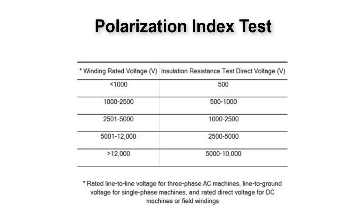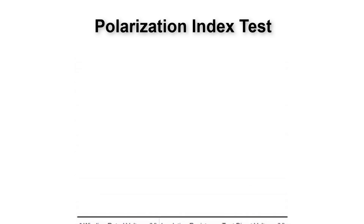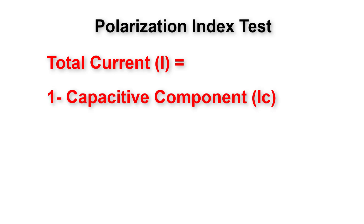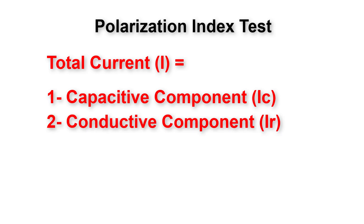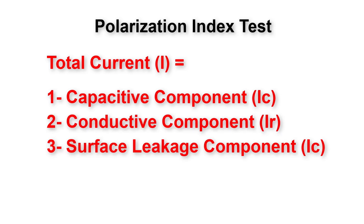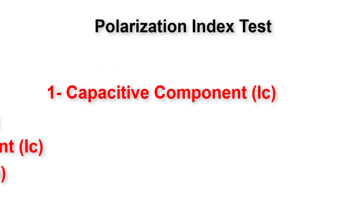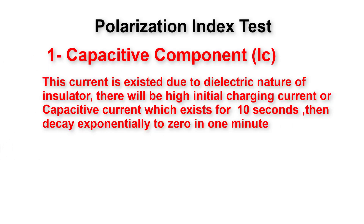Let's understand exactly what happens during the 10 minutes after applying a high DC voltage — which could be 5 kilovolts for a motor with a 6.9 kilovolt rating. There is a tiny current produced between the winding and the body in the milli or micro ampere range. This current has four main components: capacitive, conductive, surface leakage, and polarization.